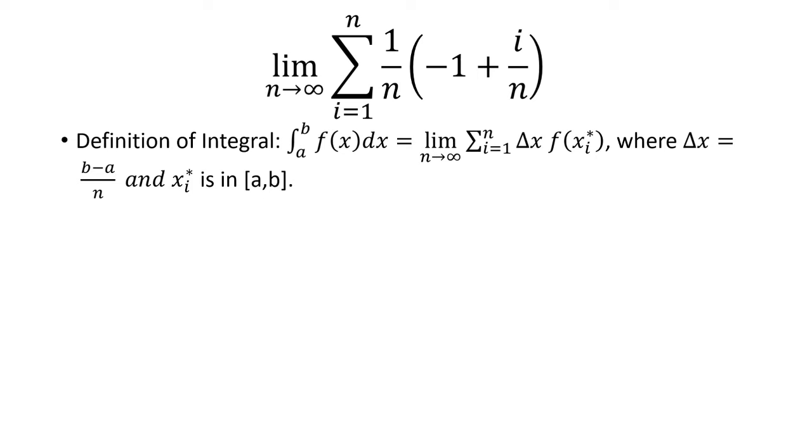If you have the integral from a to b of f(x) dx, that's the same thing as a limit as n approaches infinity, the sum from i equals 1 to n of Δx times f(xi*), where Δx equals (b - a)/n and xi* is some point in an interval [a,b].